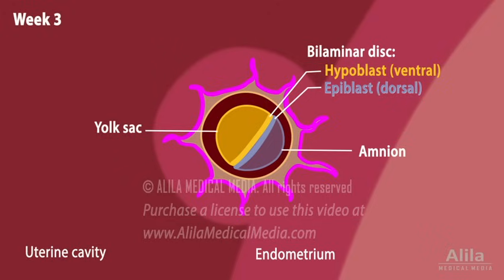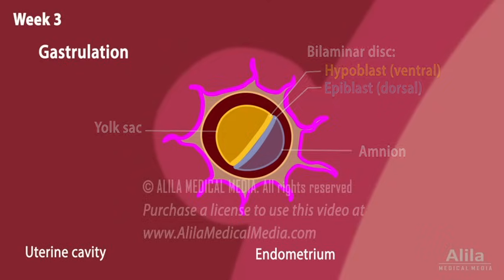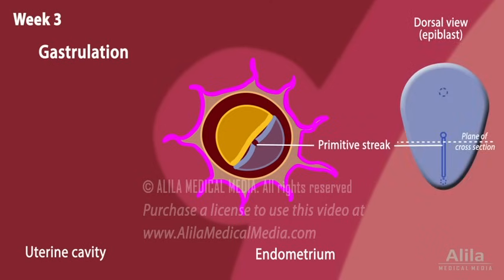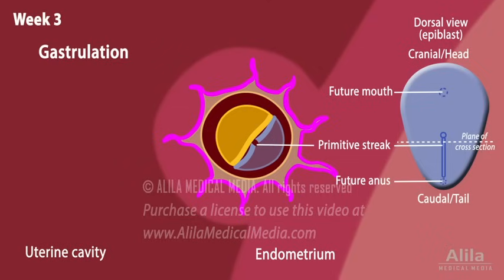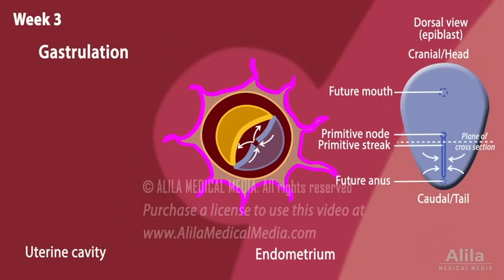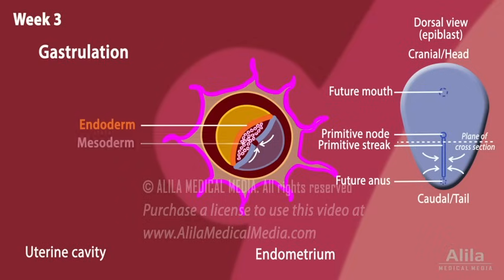In week three, the two-layered disc transforms into three germ layers through the process of gastrulation, during which the cells lose their pluripotency and become committed to a smaller number of cell types. Gastrulation begins with the emergence of the primitive streak on the epiblast surface, setting the cranial-caudal, or head-to-tail, axis of the embryo. A primitive node at the cranial end of the primitive streak produces signaling factors that control the movement of cells. Epiblast cells migrate toward and through the primitive streak into the embryo. The first set of cells displaces the hypoblast and forms the endoderm. The second set fills in the space between the endoderm and epiblast, creating the mesoderm. The remaining epiblast cells form the ectoderm.